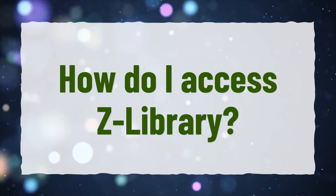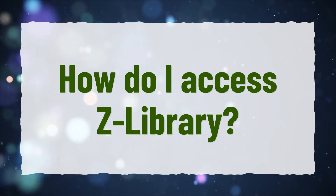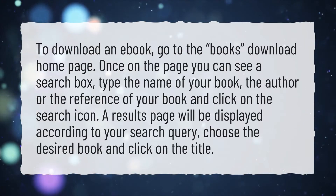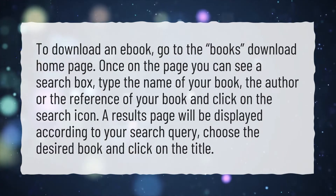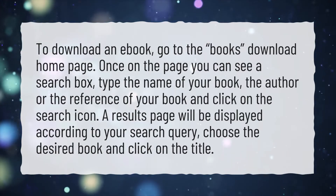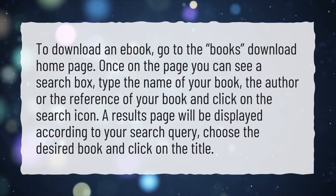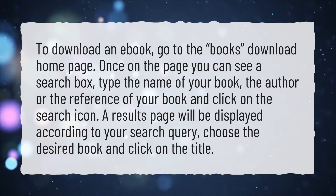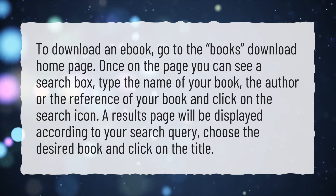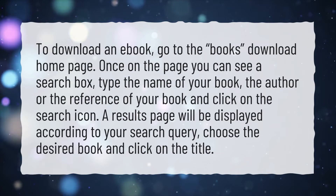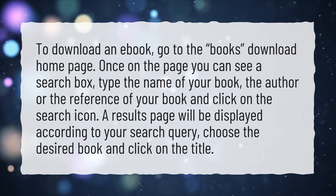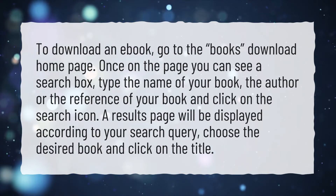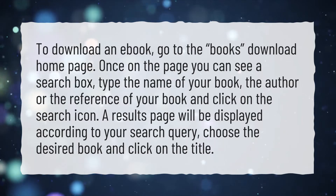How do I access C-Library? To download an e-book, go to the book's download home page. Once on the page you can see a search box. Type the name of your book, the author, or the reference of your book and click on the search icon. A results page will be displayed according to your search query. Choose the desired book and click on the title.